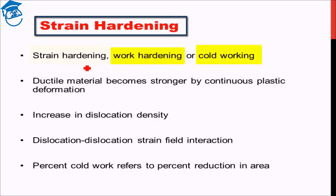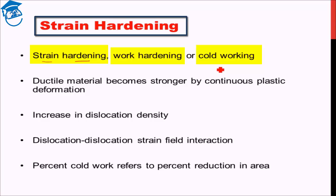The name 'strain hardening' suggests it is a hardening process due to internal strain being generated. 'Work hardening' means you work on the material — you impart energy into the material — and as a result the material hardens. 'Cold working' means that the working or deformation of the material is carried out at relatively low temperature; you cannot go to elevated temperature for strain hardening to occur — that's why 'cold working.'